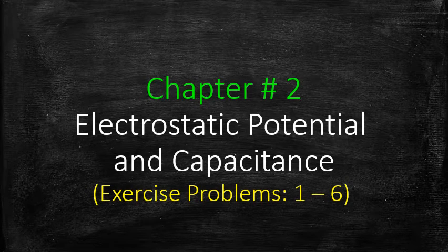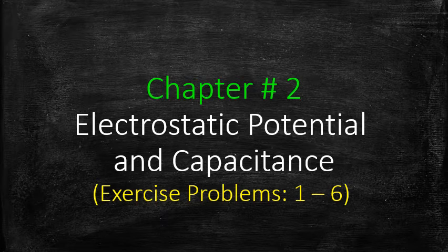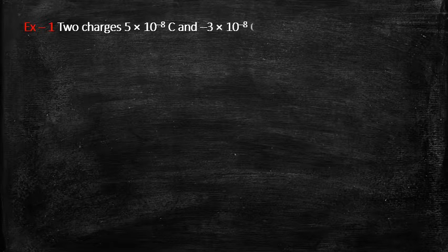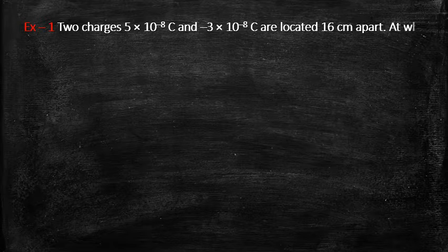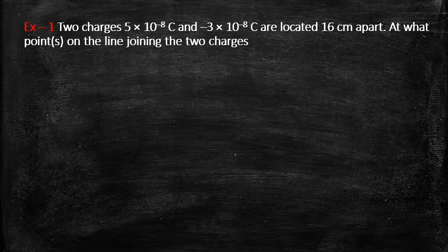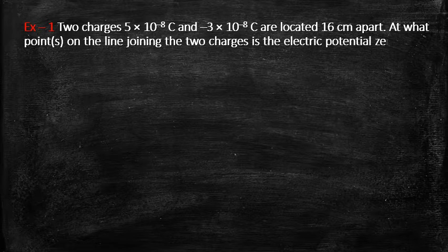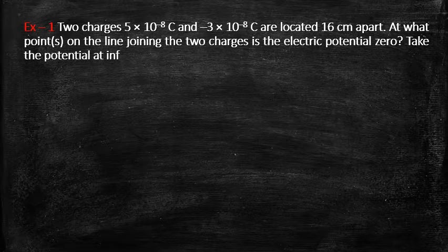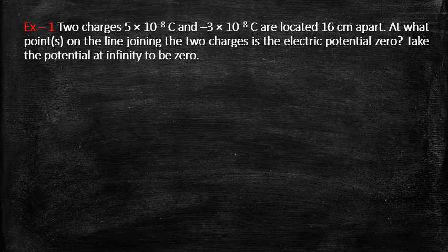Hello students. Today we will discuss the first six exercise problems of Chapter 2: Electrostatic Potential and Capacitance. In the first one, we have two charges — 5×10⁻⁸ coulomb and −3×10⁻⁸ coulomb — located 16 centimeters apart. We are asked to find the point on the line joining these two charges where the electrostatic potential will be zero, considering potential to be zero at infinity.